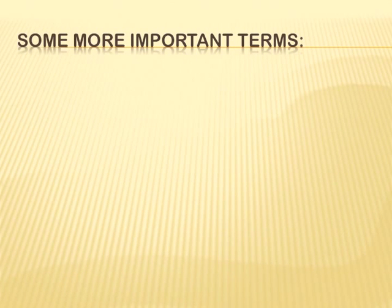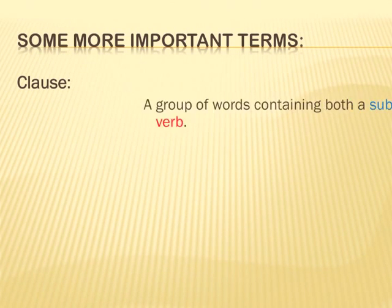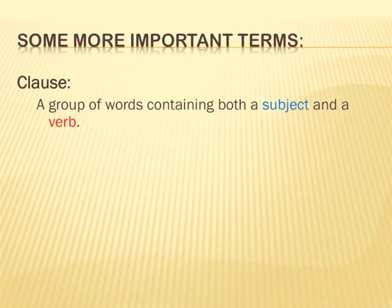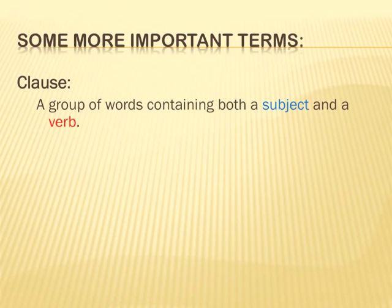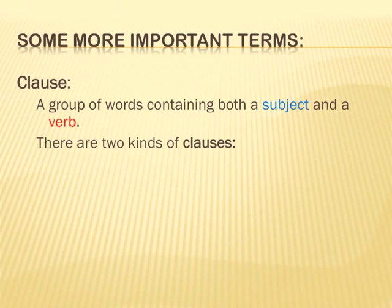A couple more important terms — now we're getting to the crux of how sentences are constructed correctly. A clause is a group of words containing both a subject and a verb. You may think of a sentence as being something containing a subject and a verb, but it's not quite that simple. Think of a clause as being a group of words containing both a subject and a verb.